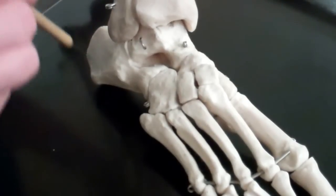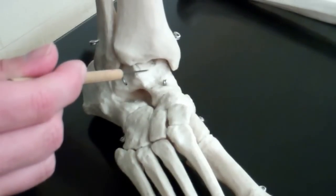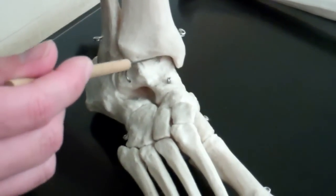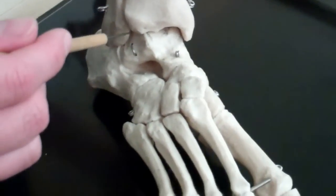And then the talus, which is the one that actually articulates with the tibia and the fibula as you do your plantar and dorsal flexions, which we'll discuss when we talk about joints.